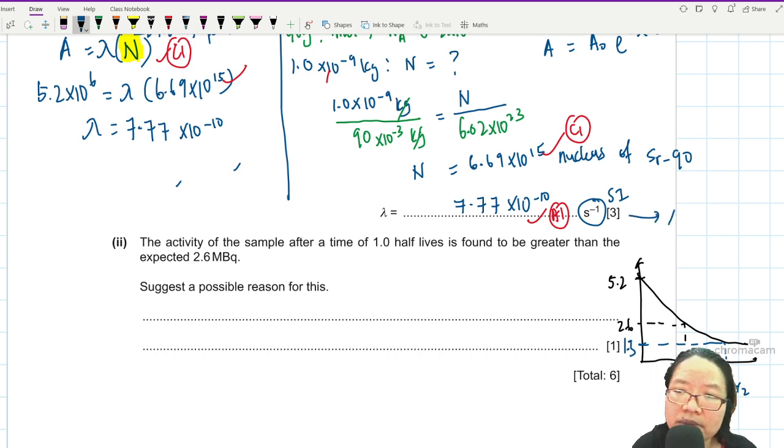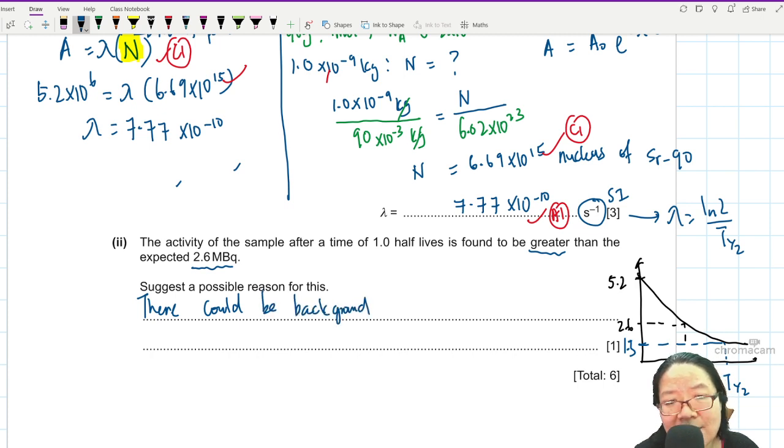But the problem is after one half-life, I don't get 2.6. Means how they calculate half-life from lambda, lambda is ln 2 over half-life, they can find half-life. So why is it more than 2.6? That means there are other things that are radioactive. What are the other things that can be radioactive? Background radiation. There could be background radiation. Everything is radioactive to a certain extent. So there's always background radiation. Even your banana sitting on the table will have its own background radiation. So there's background radiation.